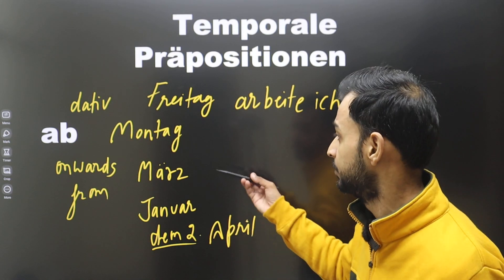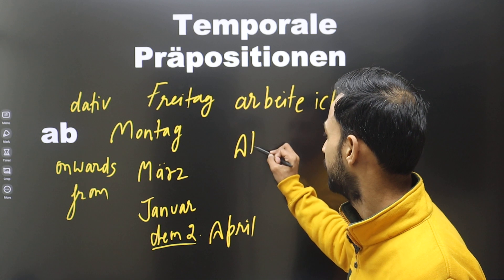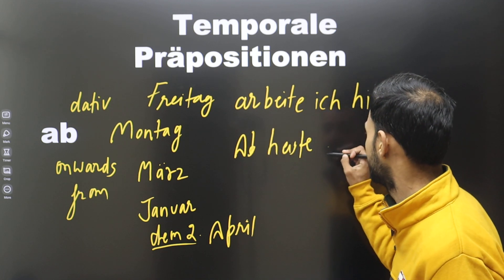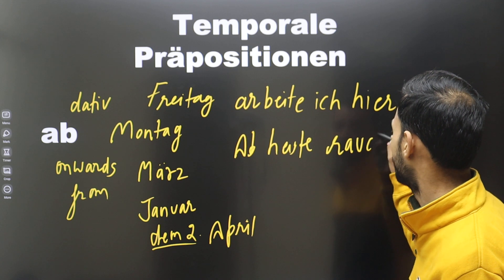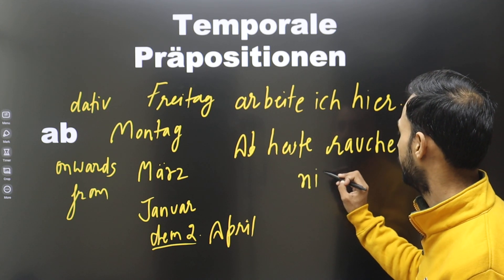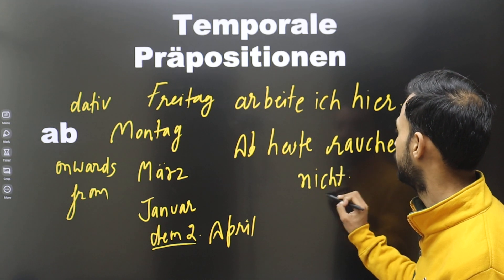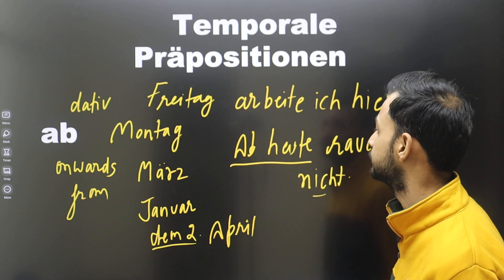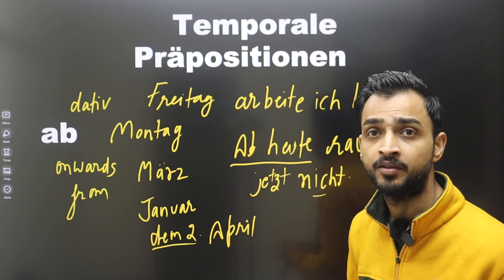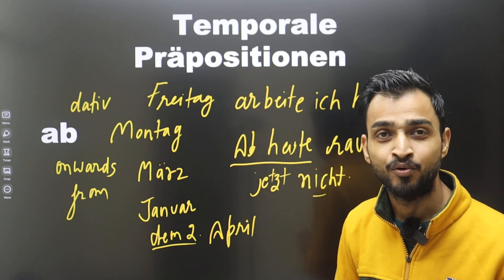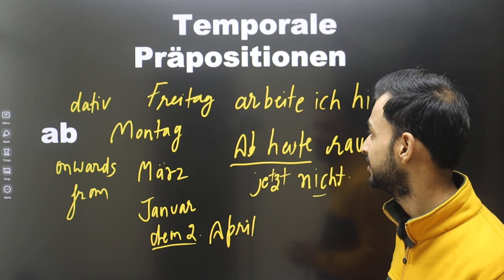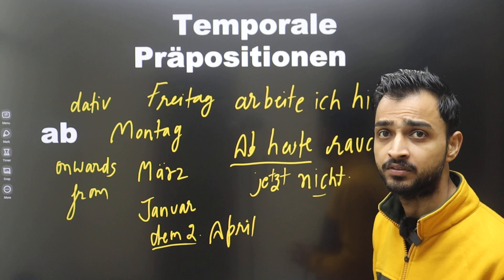We can also say 'ab heute' — from now, from today onwards. For example: 'Ab heute rauche ich nicht mehr' — from now onwards I will not smoke. So 'ab' means 'from' or 'onwards.'